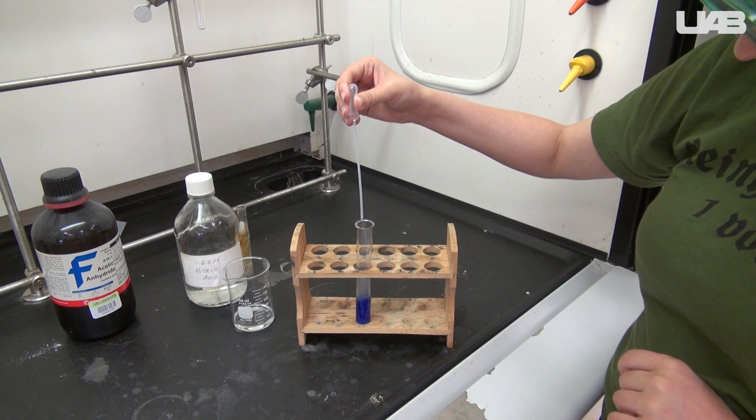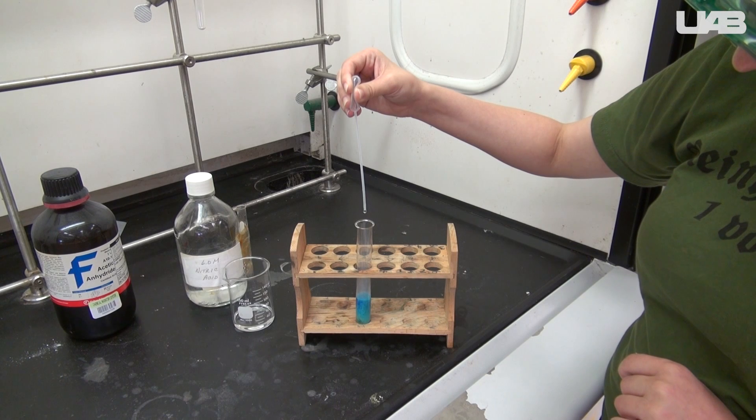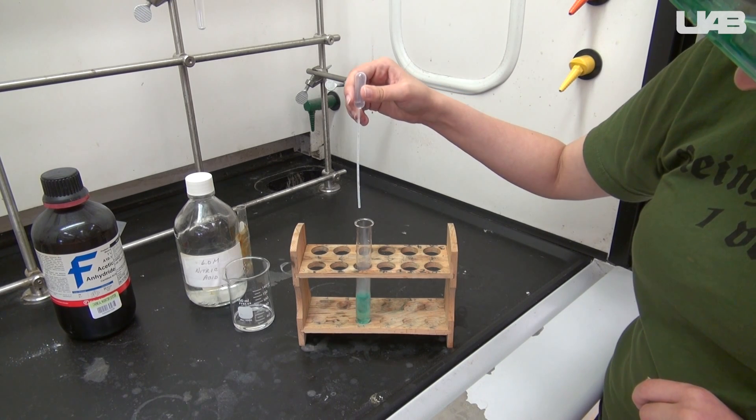Next, you will add 6 molar nitric acid until the solution returns to how it looked before. Record your observations. What is the predominant species here?